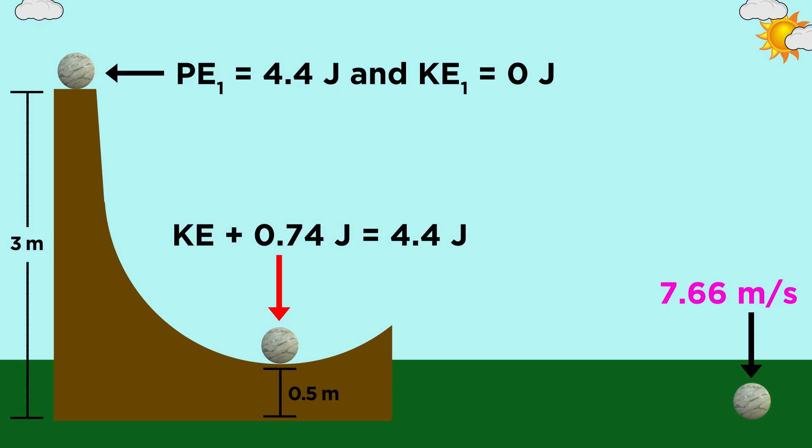Kinetic and potential energies must add up to four point four joules, so the kinetic energy at this moment must be three point seven joules. With that, we just plug into the same equation as before, rearrange, and take the square root, and we get seven point zero two meters per second at that point.